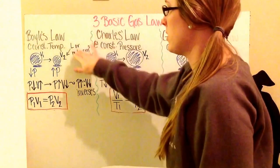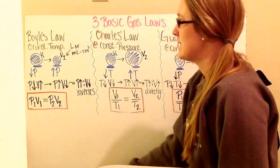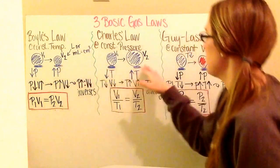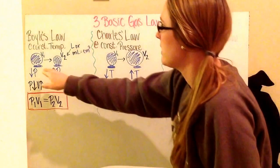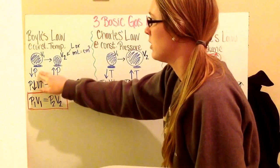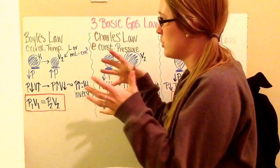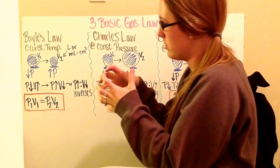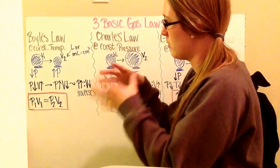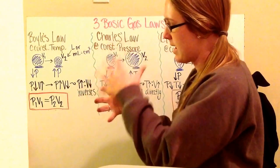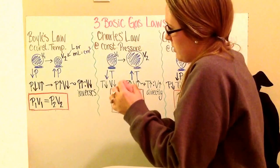Boyle's Law is at a constant temperature. An example of this would be if you have a balloon — I use balloons for all of the examples, it's just something tangible. If I have a balloon at very low pressure and I put it under high pressure, that pressure is going to restrict my balloon, push down on my balloon more and more, and compact it, so the volume of the air inside is going to shrink.